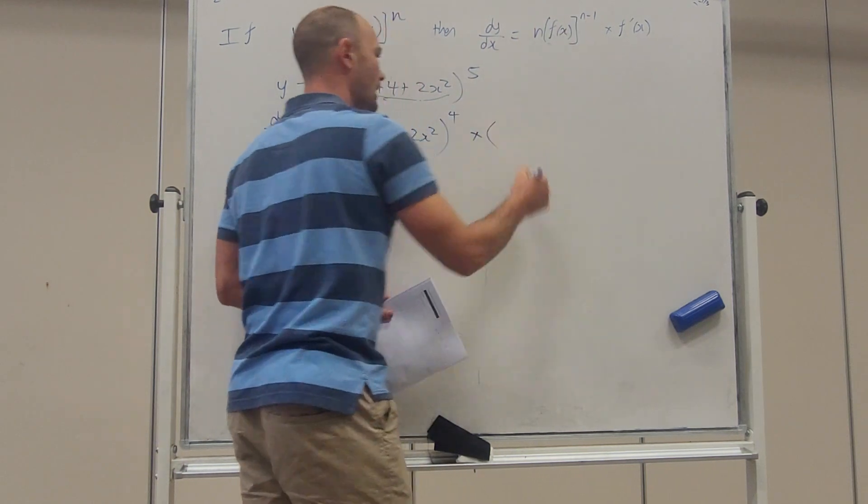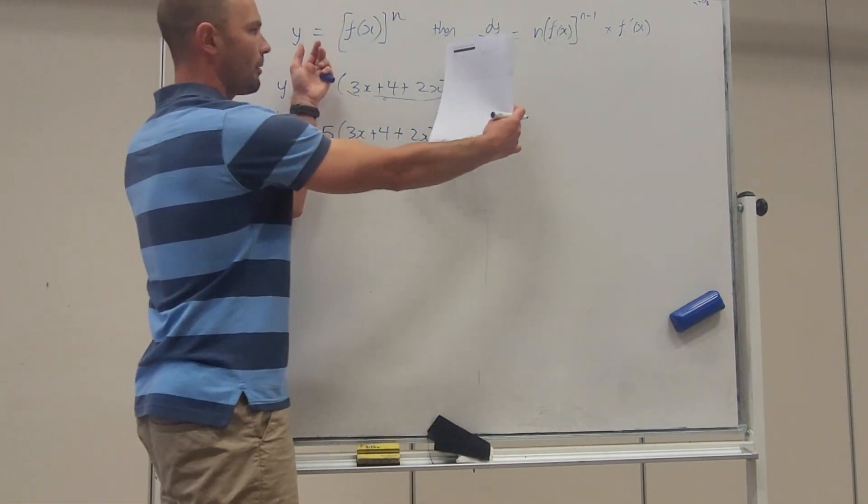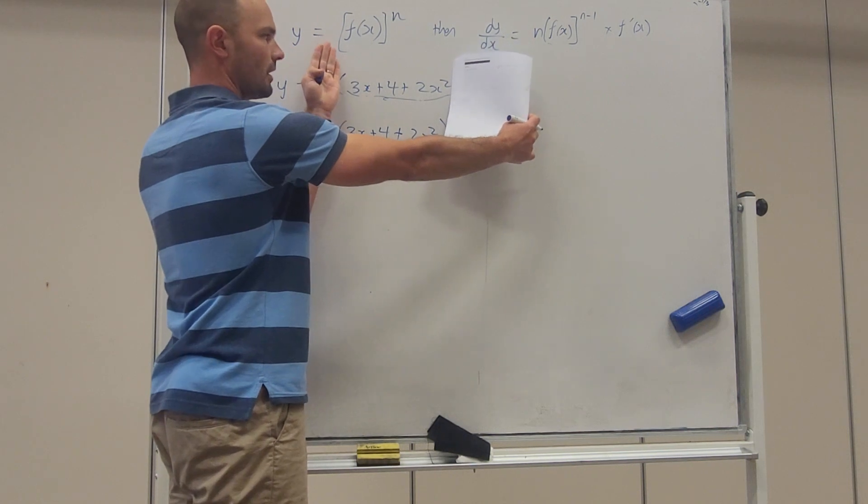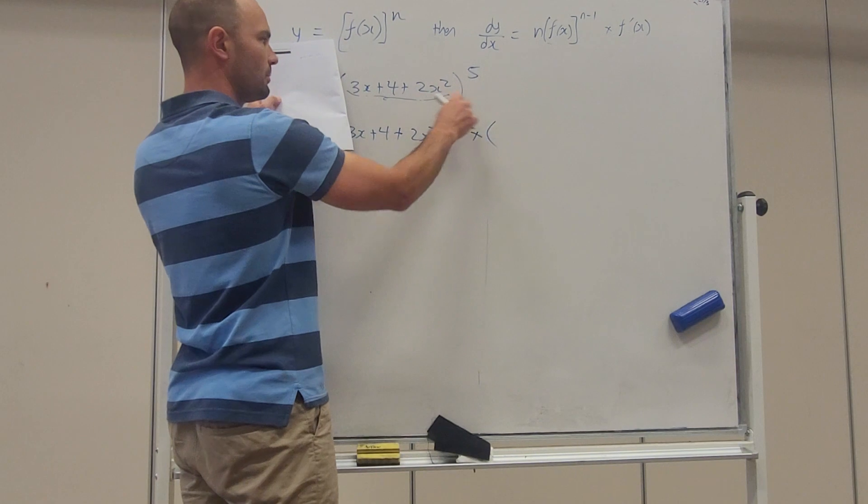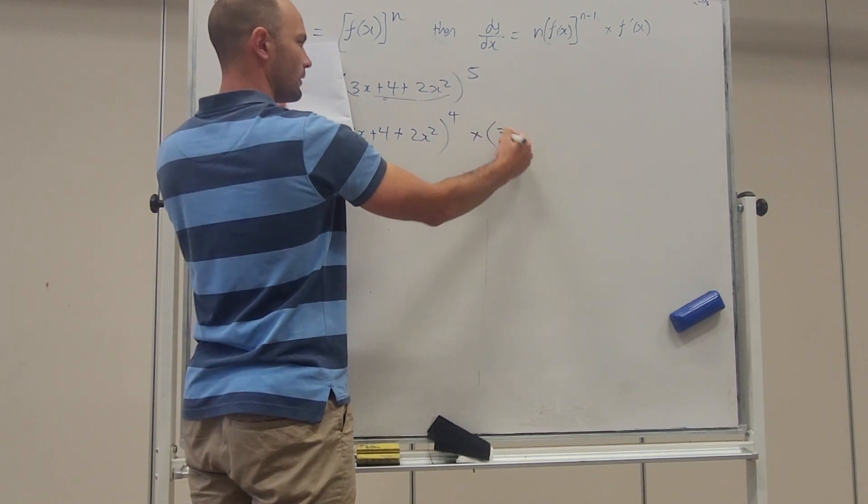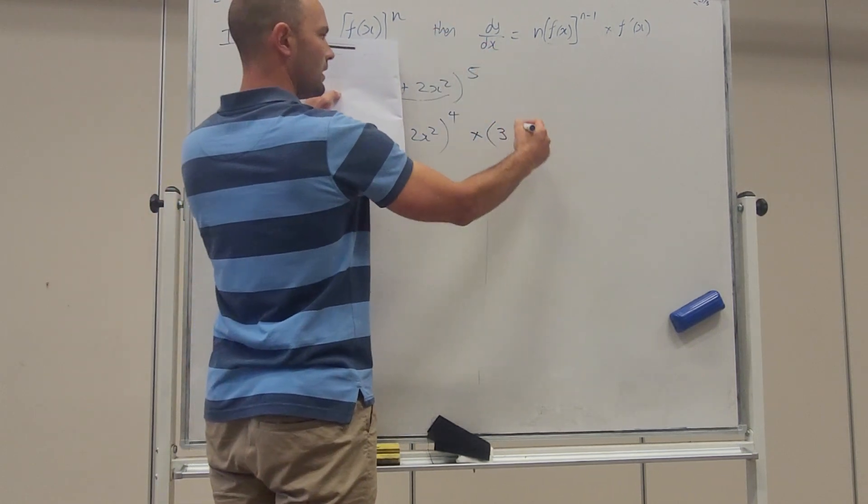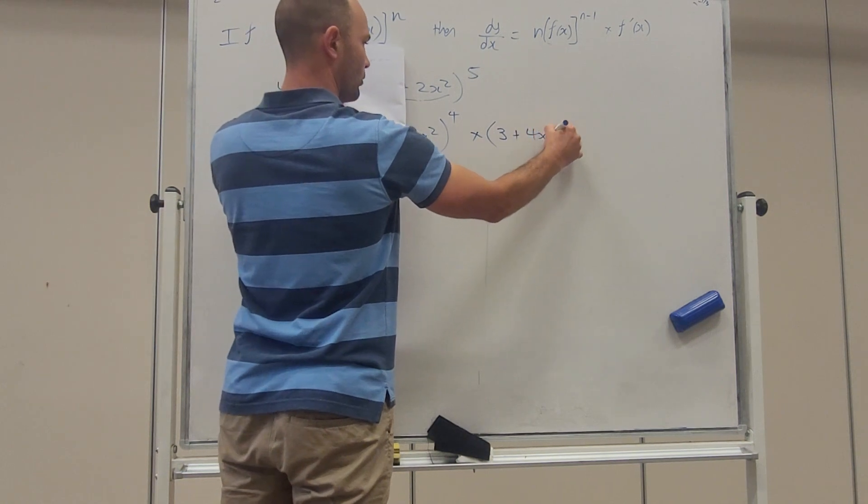And then multiplied by f'(x). All you multiply it by then is the derivative of the inside. So we look at the inside, we'll chuck it in brackets and we just do simple differentiation. Derivative of 3x is 3. Derivative of positive 4 disappears. Derivative of 2x² is 4x.